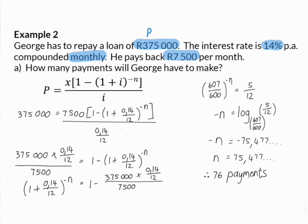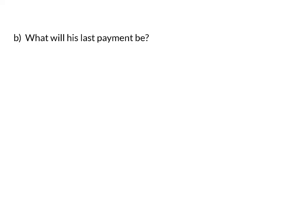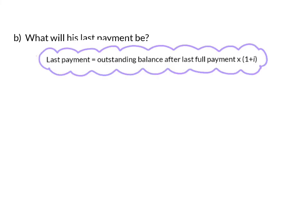75 of these payments will be full payments of R7,500, and the last payment will be a bit smaller. Question B: What will his last payment be? We just determined there will be 75 full payments and one smaller final payment, so we need to determine the value of the 76th payment. We need to find the outstanding balance after the 75th payment — the last full payment — and then add one month's interest.